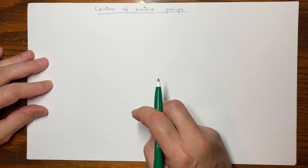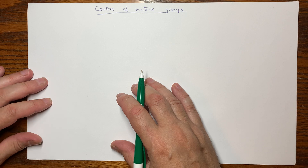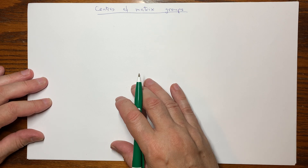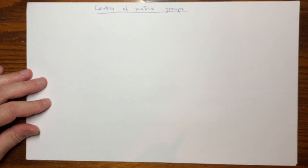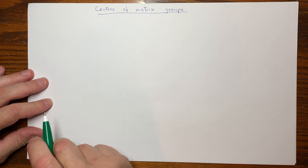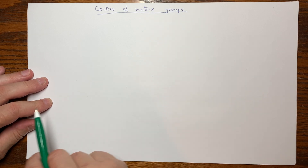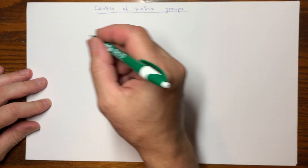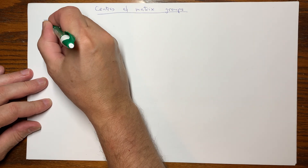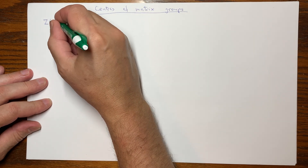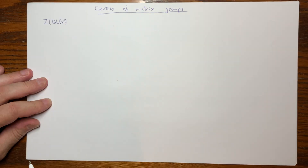Centers are useful as examples of normal subgroups, but also as indicators of non-abelianness of matrix groups. A group is abelian if and only if the center is the whole group, so if we see a smaller center, we will know that the group is non-abelian. The first computation will be for the center of the general linear group.